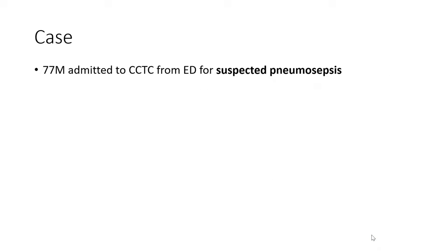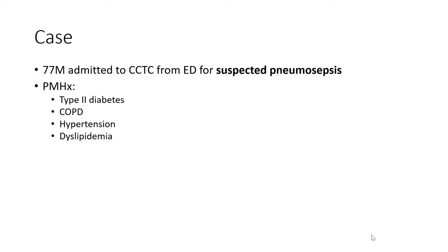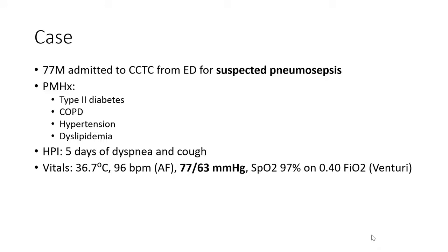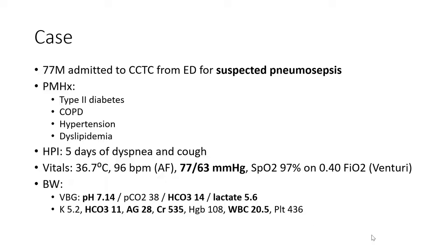We started our case with a 77-year-old gentleman who was recently admitted to our ICU from the emergency department for suspected pneumosepsis. Past medical history included type 2 diabetes, COPD, hypertension, and dyslipidemia. The patient had presented with 5 days of dyspnea and cough. Initial triage vitals were remarkable for hypotension with a blood pressure of 77 over 63 mmHg, oxygen saturations of 97% on 40% FiO2 with Venturi mask, and initial blood work demonstrated an elevated lactate with metabolic acidosis, significant renal dysfunction, and leukocytosis.